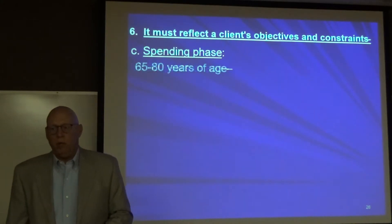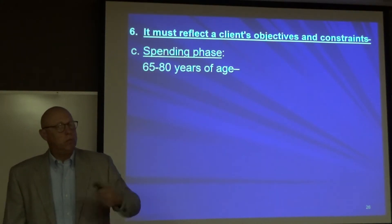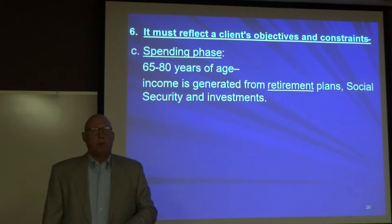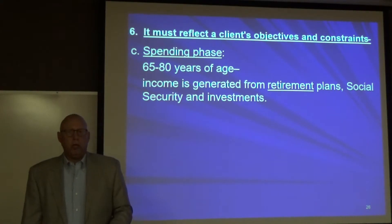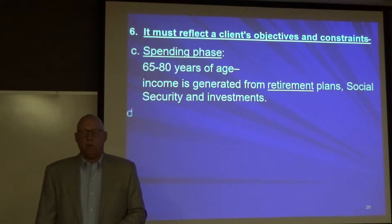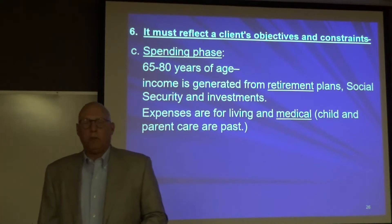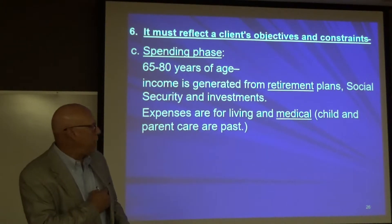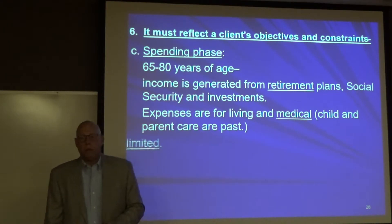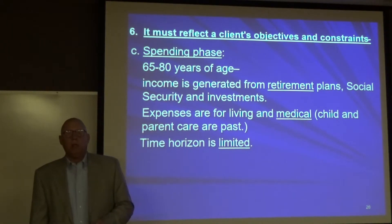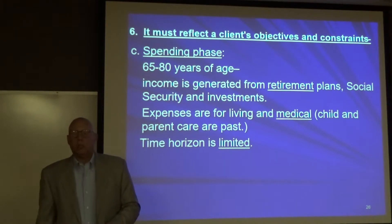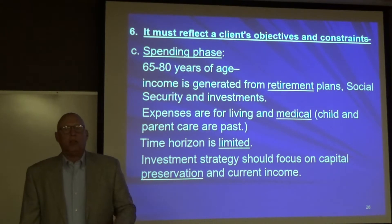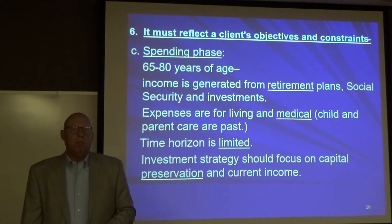Then we're at the spending phase — ages 65 to 80. Income is generated from your retirement plans, social security, pensions, and other investments. Expenses are primarily for living — food, medical. Your time horizon becomes pretty limited. You need cash on a regular basis, so you're not going to have that much in stocks. You're focusing on capital preservation and current income, which means you'll overweight bonds over stocks.